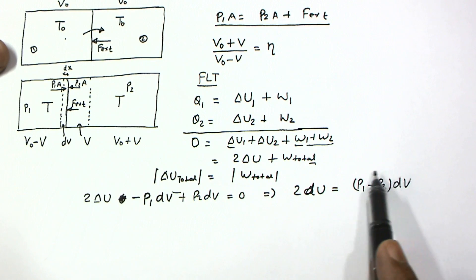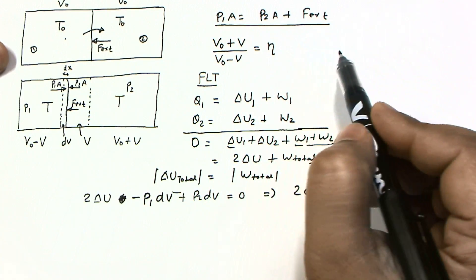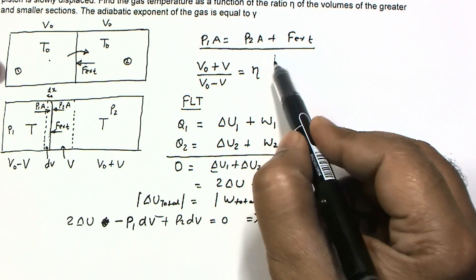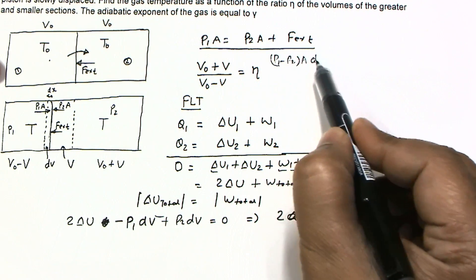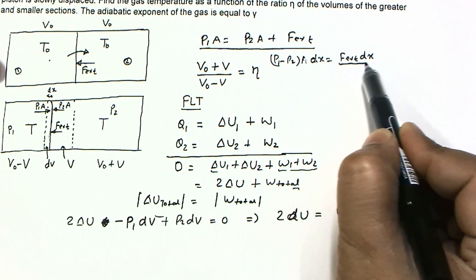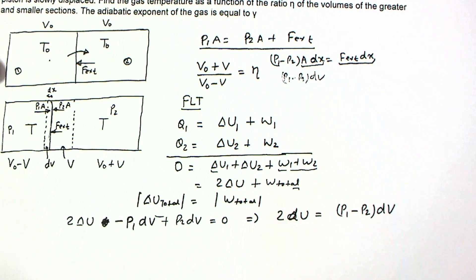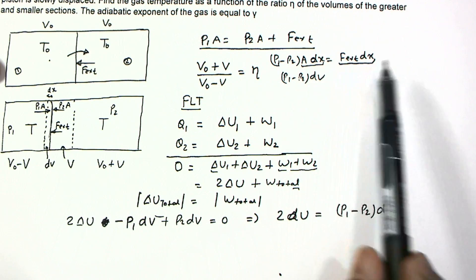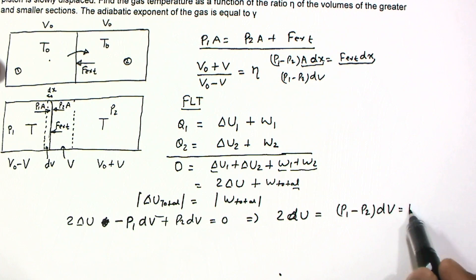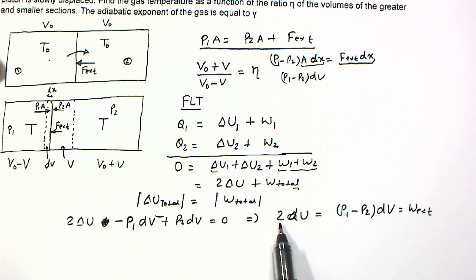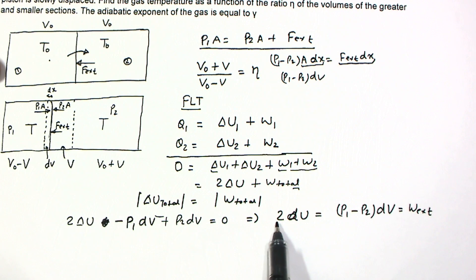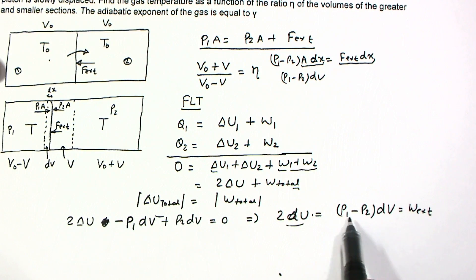We can also visualize this directly: the external force times displacement dx gives F_external·dx = (P1 − P2)·A·dx = (P1 − P2)·dV. So the work done by the external agent equals (P1 − P2)·dV. This means the work done by the external agent increases the total internal energy of the gases. This differential equation is what we need to solve.